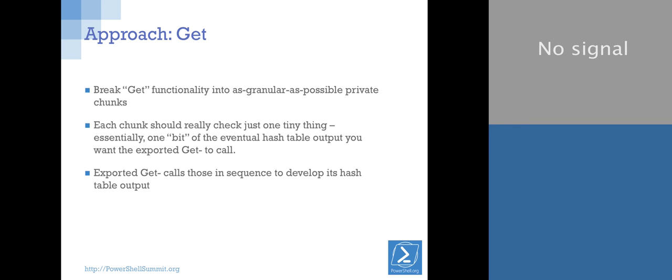The more you can break this down, the easier testing and debugging can become because they're each so tiny with so few moving parts that if they break, you should be able to look right at what's breaking. So the approach has been to get your get functionality as absolutely granular as you possibly can - one tiny little itsy-bitsy bit. Your exported get target resource then just calls those in order, assembles its output hash table, and spews it out.